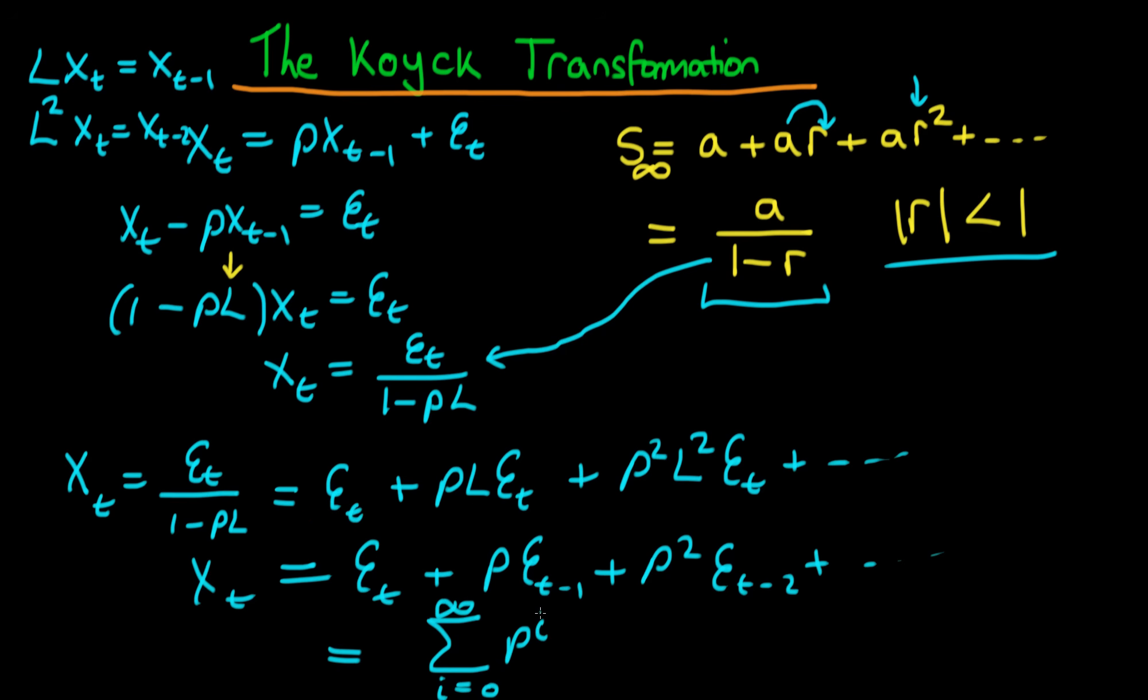And if we write this a little bit more compactly, we can write that this is equal to the sum from i equals 0 to infinity of rho to the i Et minus i. So what have we done here? We've taken a process that was an AR1 process, and we have converted it into essentially an infinite moving average process.